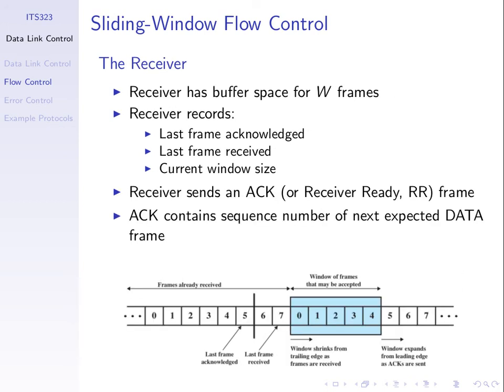It's similar with the receiver, except the receiver keeps track of what it has received. For example, it has received frames six and seven. What it has buffer space available to receive in the future — with a maximum buffer size of seven frames, having received and stored two frames, it can store another five. Similar concepts exist between sender and receiver. Any questions on sliding window before we calculate the performance?